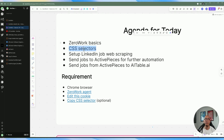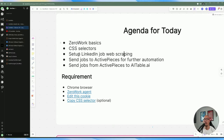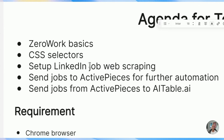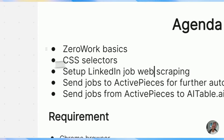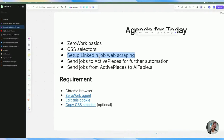The main thing we're going to be doing today is setting up a LinkedIn job web scraping, similar to my previous video, but using ZeroWork instead. Rather than using an actor, we're actually building the web scraping from scratch. It's going to be free aside from ZeroWork itself, since it runs on your own machine — no cloud fees — so everything will be free and ready to go once you build out the automation.